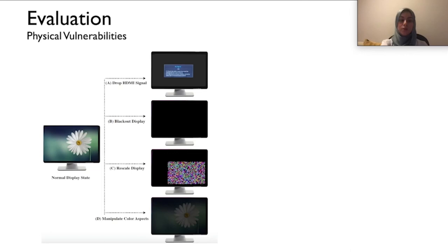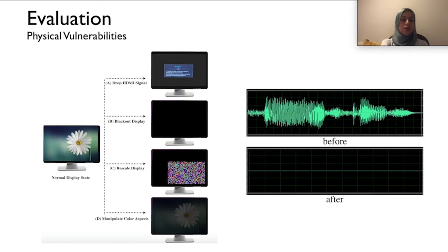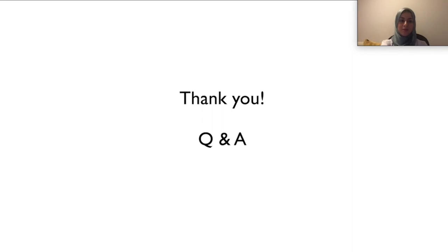Other anomalies enable control of audio signals as well. These anomalies can be exploited to achieve various damages — for example, putting the Smart TV into a fake-off mode, and even stealthily affecting the viewer's health through manipulating color aspects. This concludes my presentation. Thank you for your time. I'm happy to take any questions.